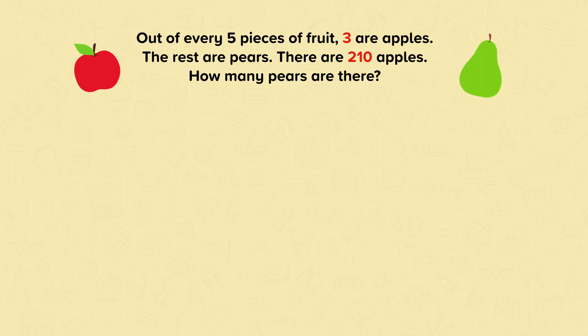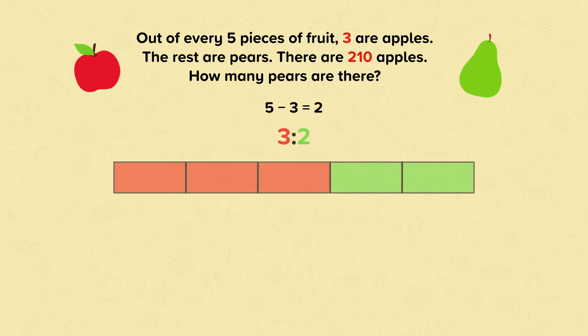How many pears are there? We know three parts are apples, but there are five parts altogether, which leaves two parts pears. 5 minus 3 equals 2, a ratio of 3 to 2.